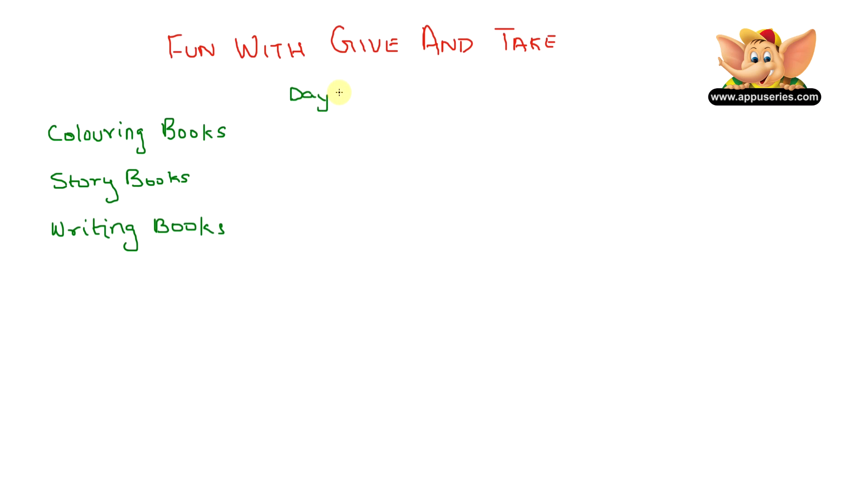So on the first day, he sold 87 coloring books, 64 story books, and 49 writing practice books. On the second day, Priya's father sold 73 coloring books, 91 story books, and 68 writing practice books.